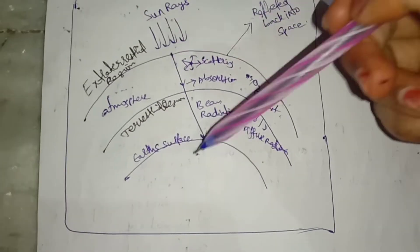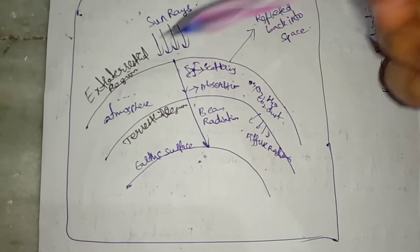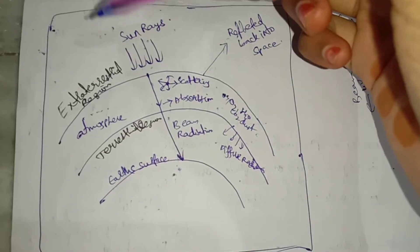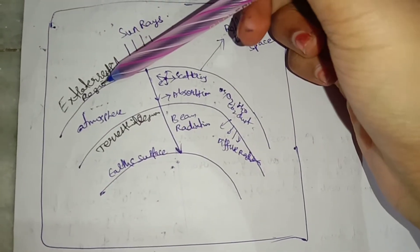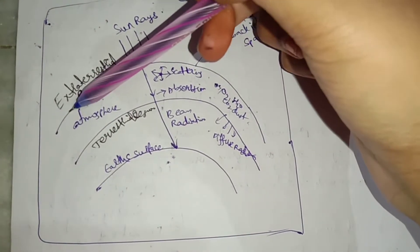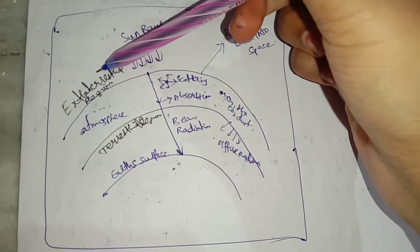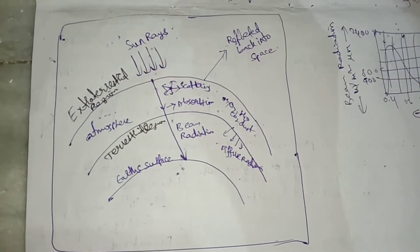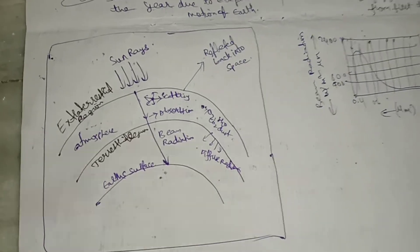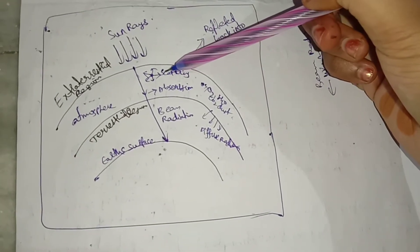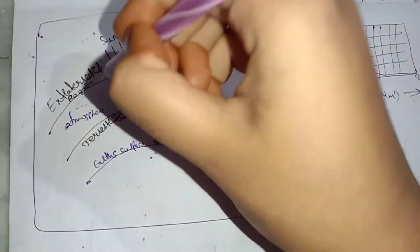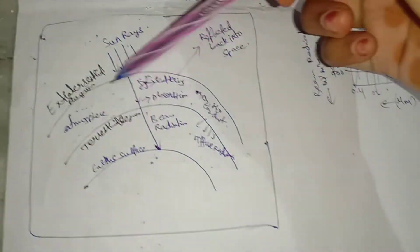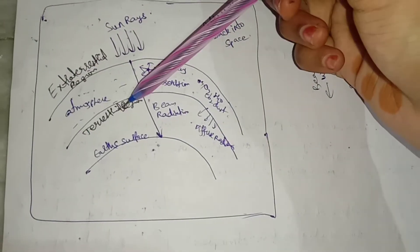This diagram shows both extraterrestrial and terrestrial regions together. The extraterrestrial region is the outer or top layer — outside the earth's atmosphere — where sun rays arrive before any scattering occurs. The terrestrial region is at the earth's surface, where absorption by particles takes place.